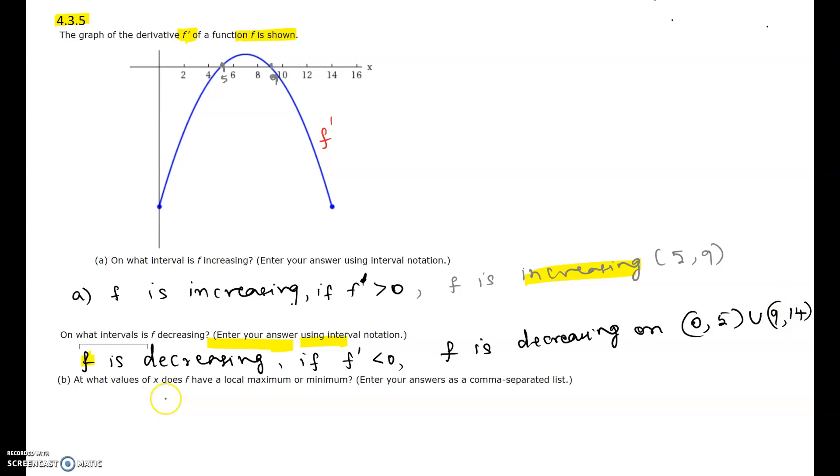At what values of x does f have a local max or min? Whenever the graph changes from increasing to decreasing, there will be a peak. The derivative must be changing from positive to negative. The derivative is changing from positive to negative at x = 9, so that is where the local maximum would be.